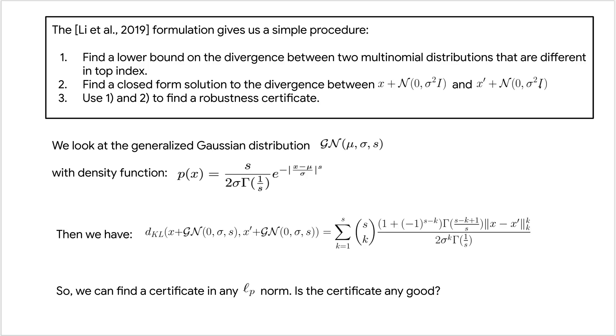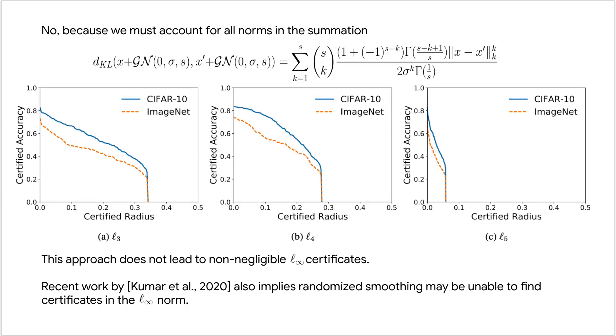The next question we should ask is: does this certificate give us any non-negligible results for large LP norms? Sadly, the short answer is no. We can't get non-negligible certificates in the L-infinity norm using generalized Gaussian noise, specifically using the KL divergence. This is because the KL divergence between X and X' when generalized Gaussian noise is added is expressed in terms of the LP norms between these values. But we have to account for each norm smaller than this S value, this scale value. So as S approaches infinity, we have to account for more norm values, and this naturally shrinks to zero.